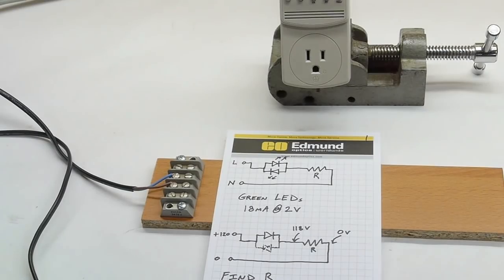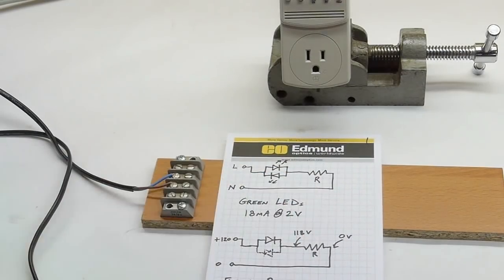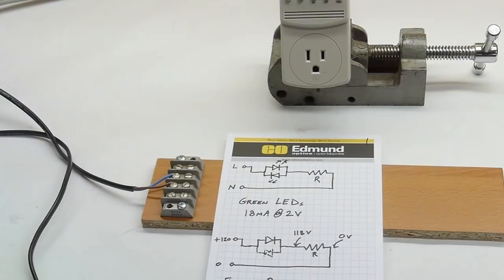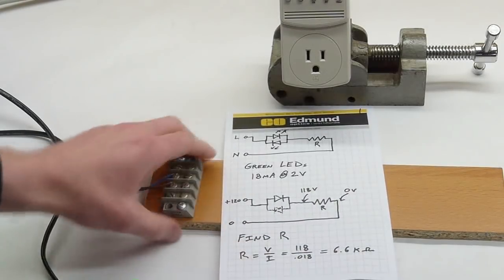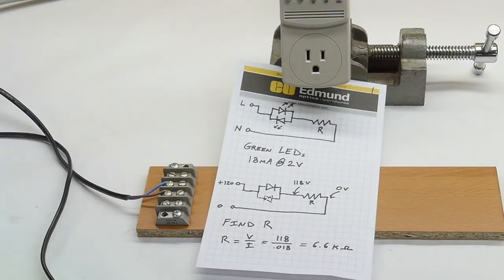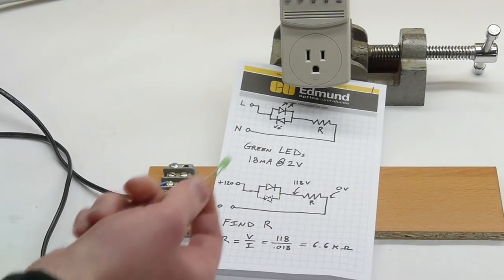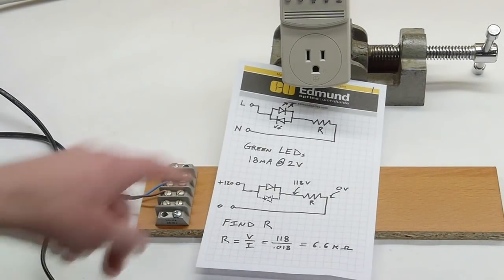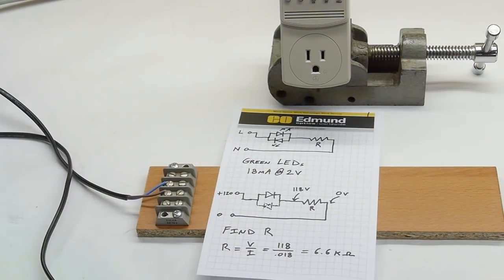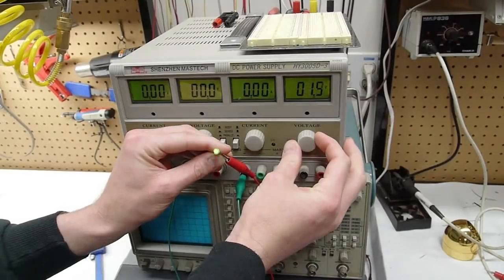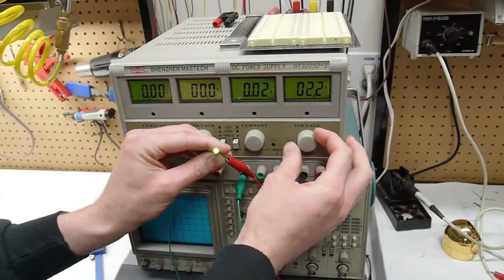So what we can do to keep that from happening is to put a big fat resistor between the LEDs and the loop formed by the power source. So how do we figure out what resistor value? We can do that by measuring the LED. I measured this cheapo green LED, and it just came up to be about 18 milliamps at 2 volts.